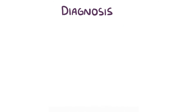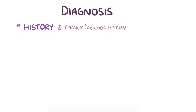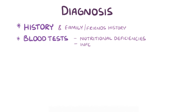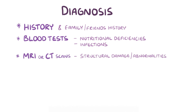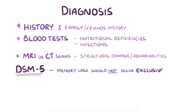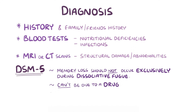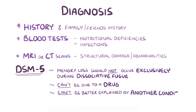Diagnosis of amnesia often requires getting a medical history from the person affected, as well as their friends and family, to help fill in the possible gaps. Blood tests can be done to detect nutritional deficiencies or infections that may impact memory, and MRI or CT imaging may be used to detect structural damage or abnormalities in the brain. For a diagnosis of dissociative amnesia, the DSM-5 states that memory loss should not occur exclusively during the course of dissociative fugue, meaning that memory loss should still be present after the episode of wandering is over. The DSM-5 further states that amnesia can't be due to any psychological effects of a drug or be better explained by another medical condition associated with retrograde amnesia.